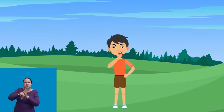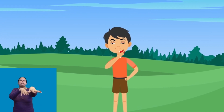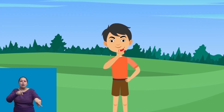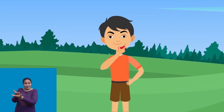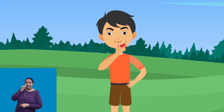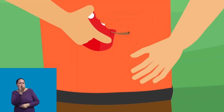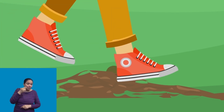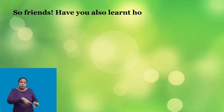We humans also play a role in seed dispersal. This child threw the leftover apple after eating a small part of it. The seeds of this leftover fruit have a potential to grow into plants.